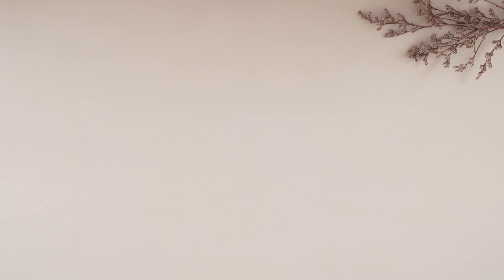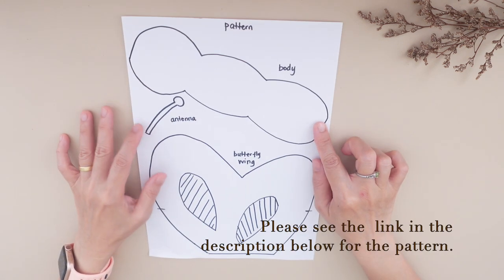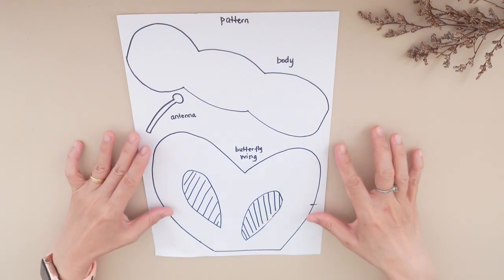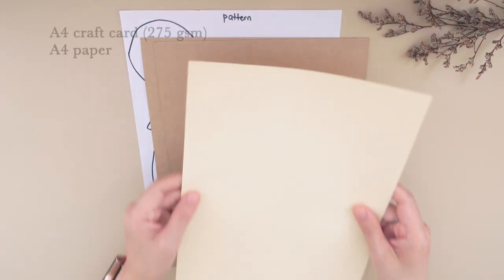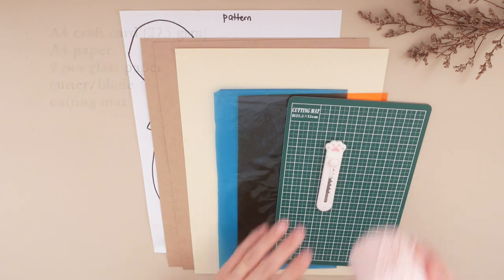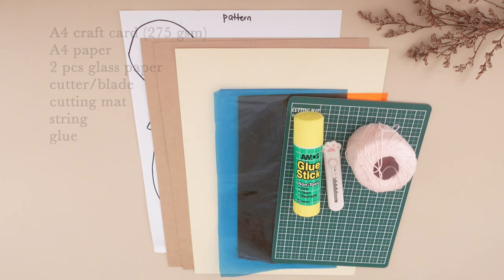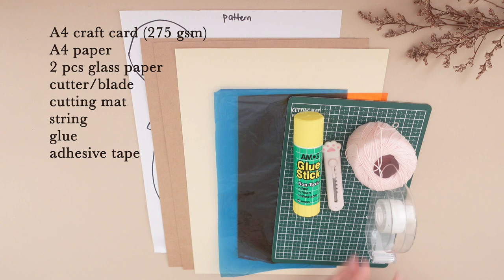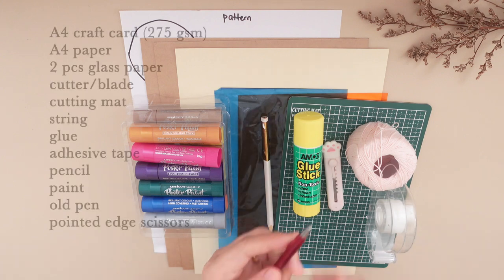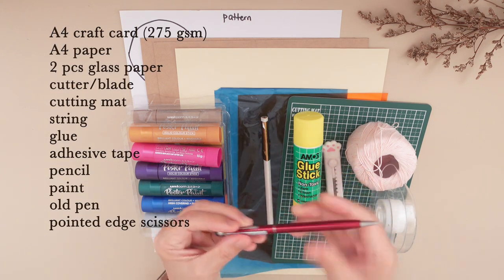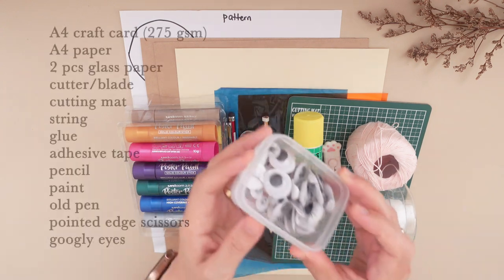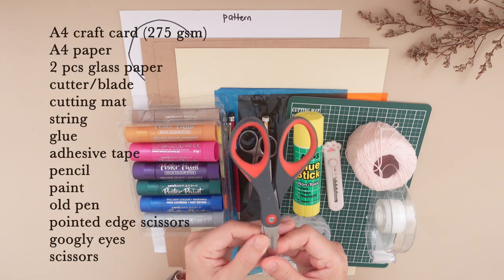For this craft we need a butterfly pattern to make cutting easier. Please see the link in the description below. We'll need craft card, A4 paper, glass paper, blade and a cutting mat, string, glue, adhesive tape, a pencil, paint, an old pen and a pointed edge, scissors, a pair of googly eyes, and a pair of scissors.